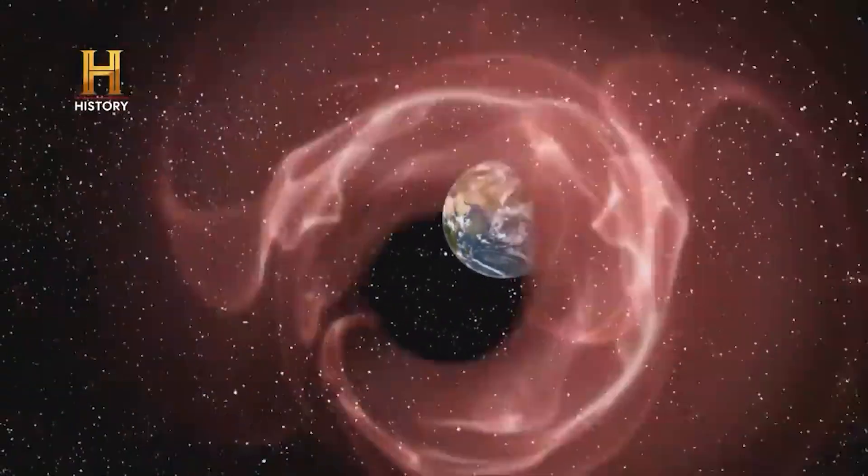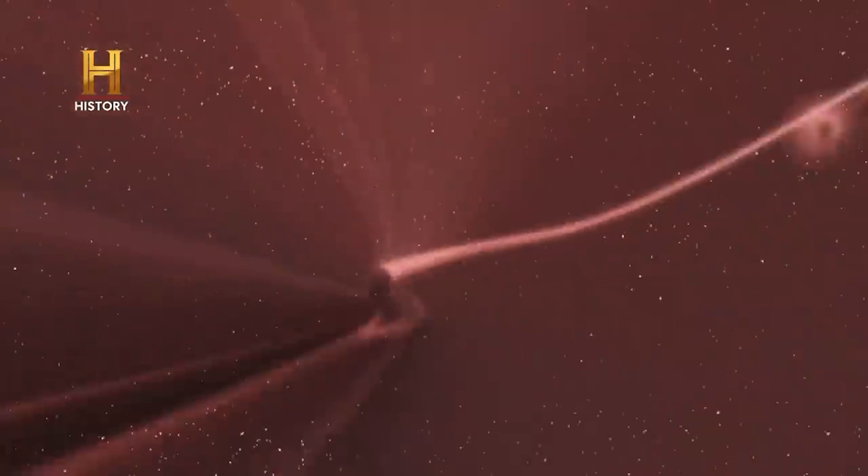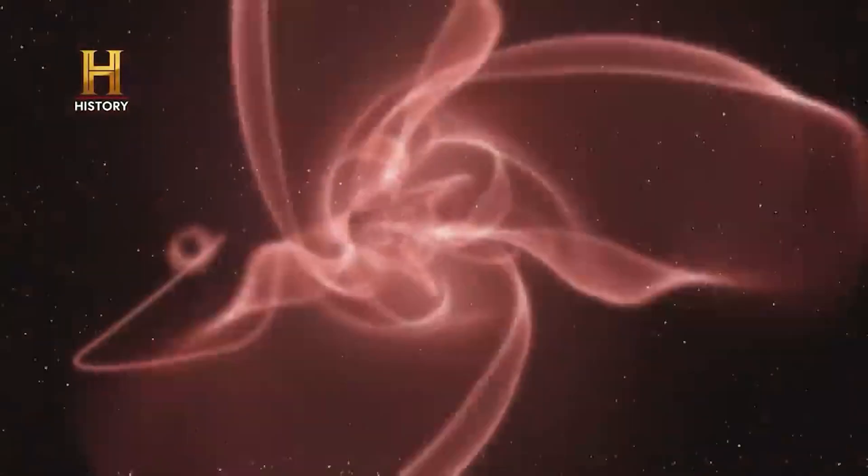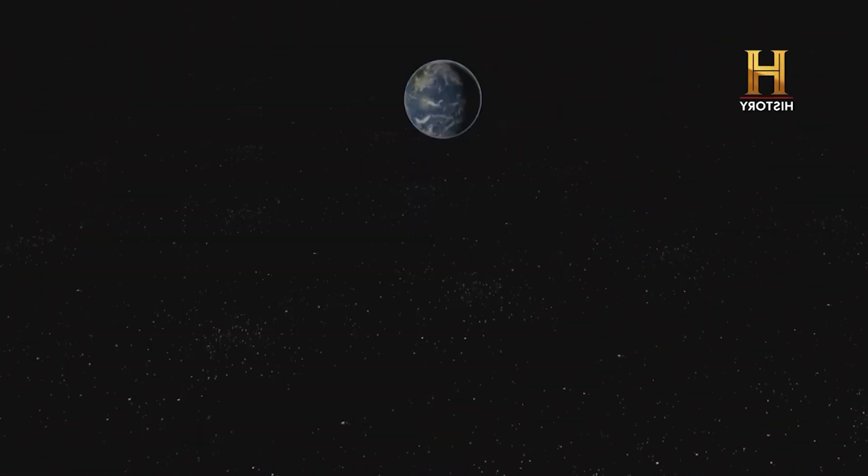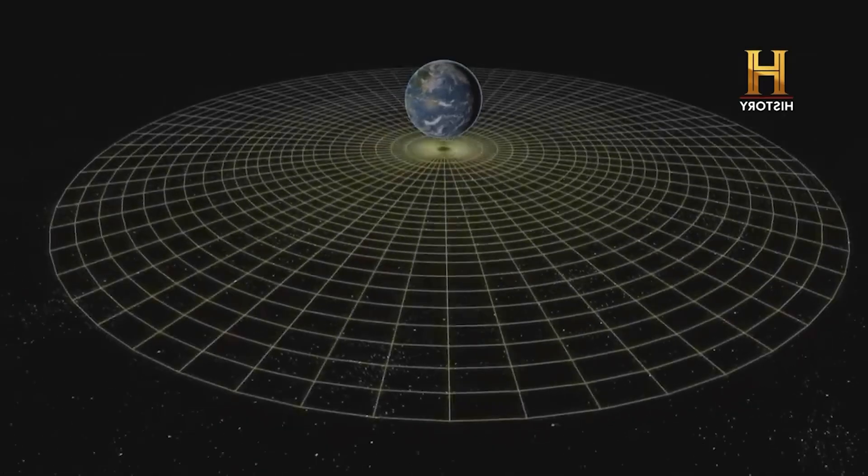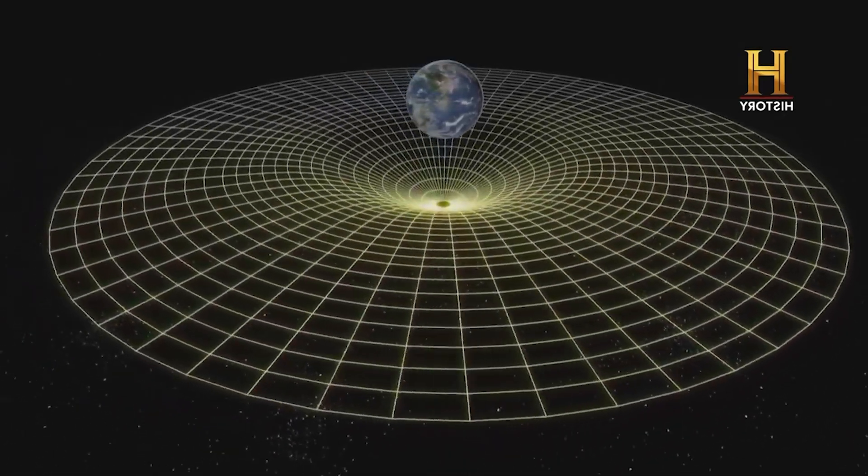In this theory, space and time can be influenced by gravity and distorted. If we could control space-time and create a curvature, we could avoid the need to travel at the speed of light.